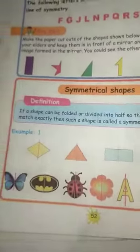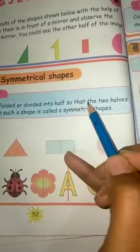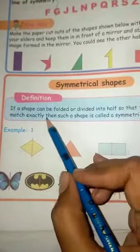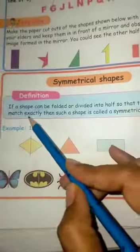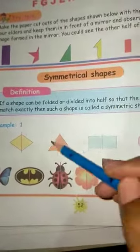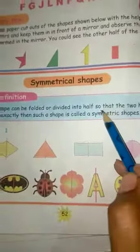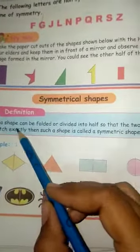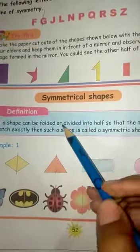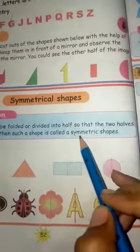Symmetrical shapes — definition: if a shape can be folded or divided into two halves, so that the two halves match exactly, then such a shape is called a symmetric shape. If we match the same shape on both sides, it is called a symmetric shape.